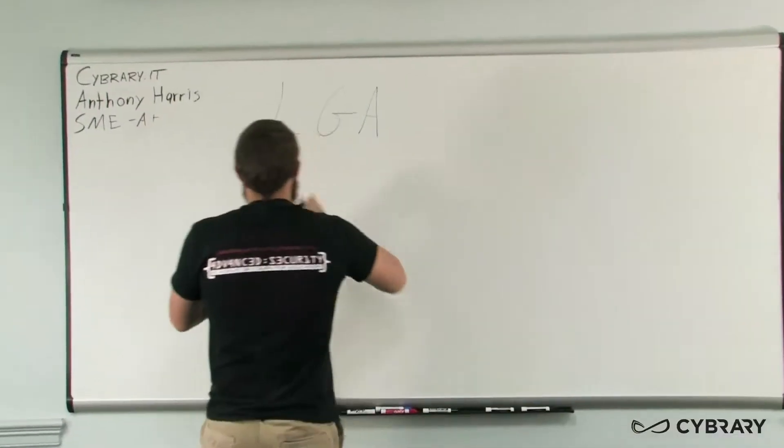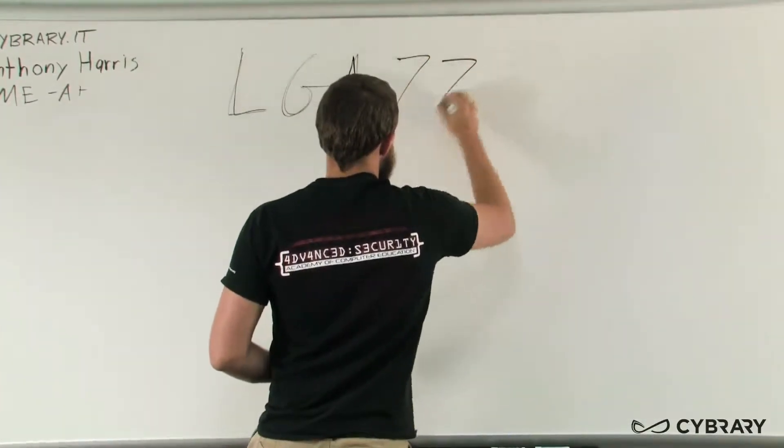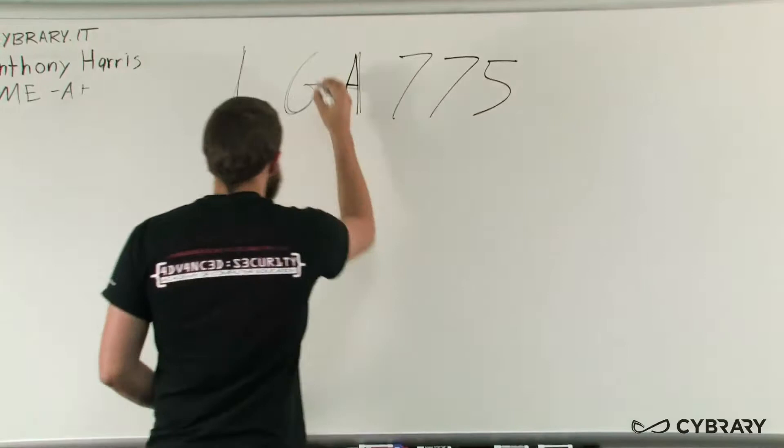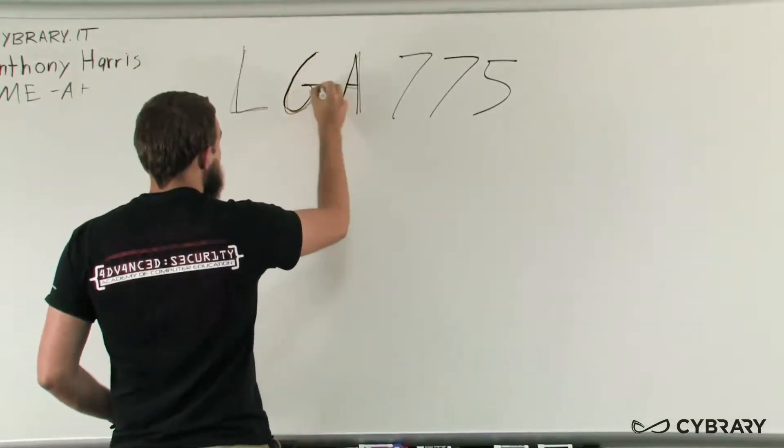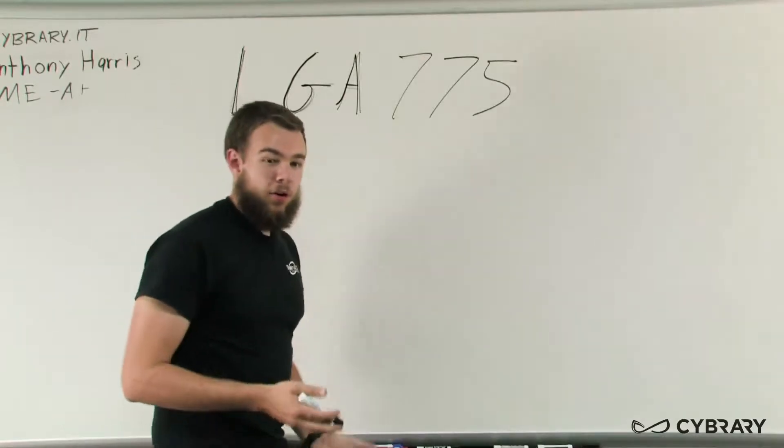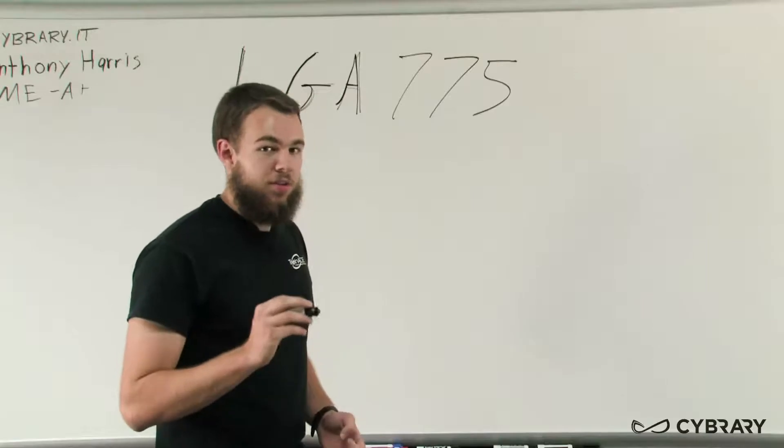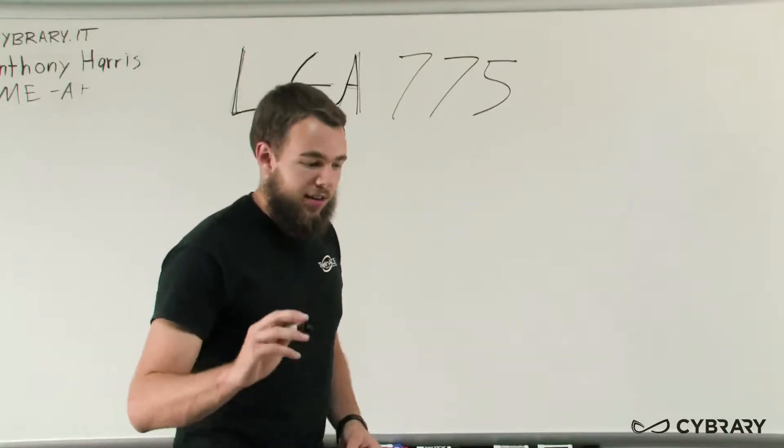We're going to go ahead and start with actual Intel type sockets. One of the first Intel type sockets that we need to know is going to be the LGA-775. LGA stands for LAN grid array and we've talked a little bit earlier that LAN grid array actually means that the pins that the CPU uses to connect are on the socket itself.